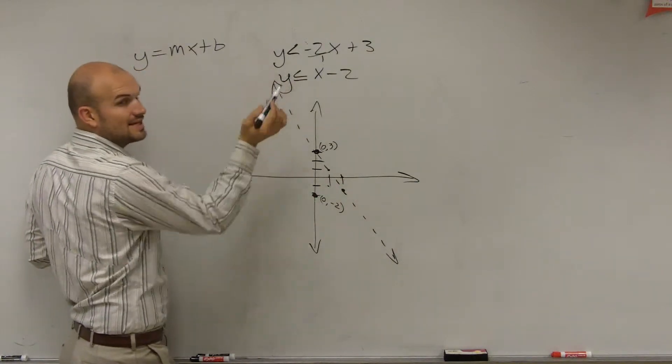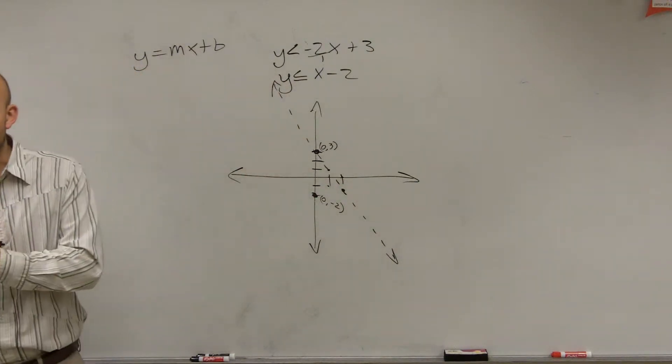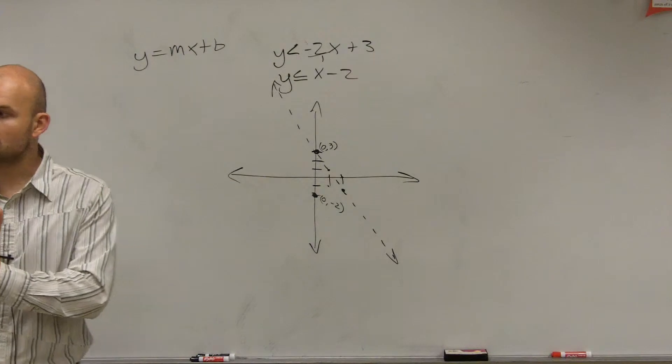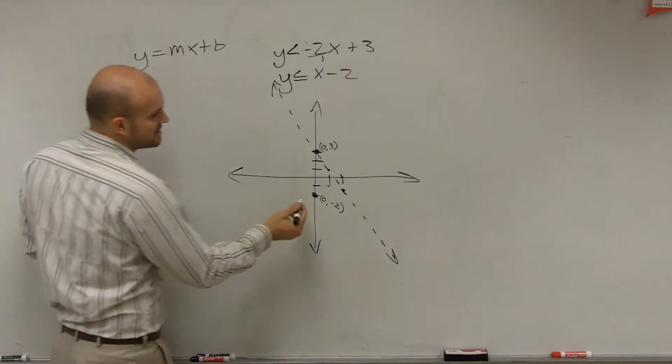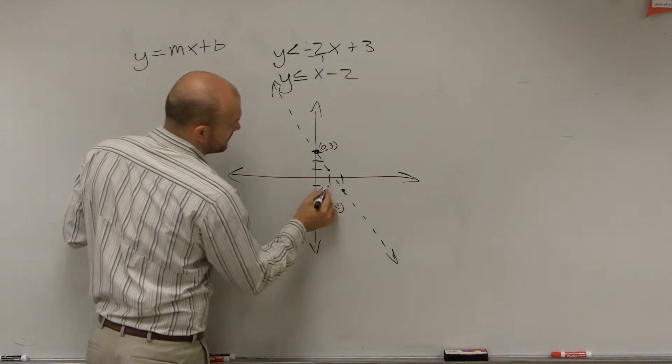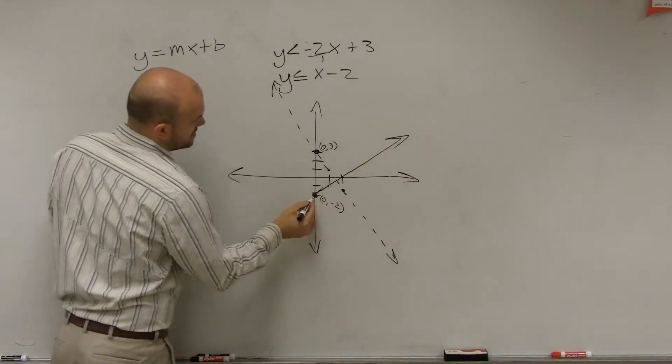And you notice this one is less than or equal to. So on a dot, that'd be a closed solution point. However, we're talking about a solution boundary line. So it's going to be a solid line. So it's going to look something like that.